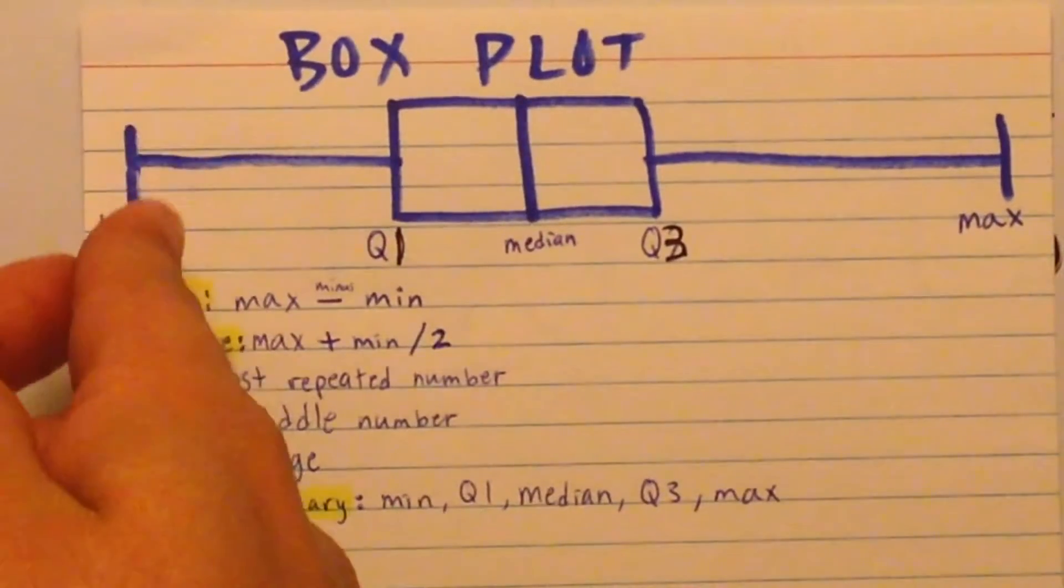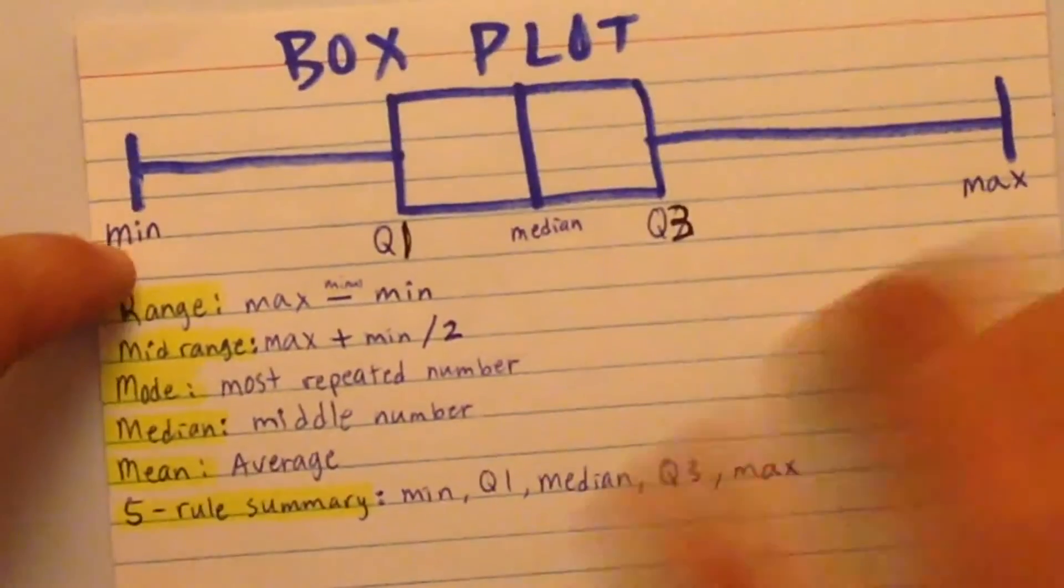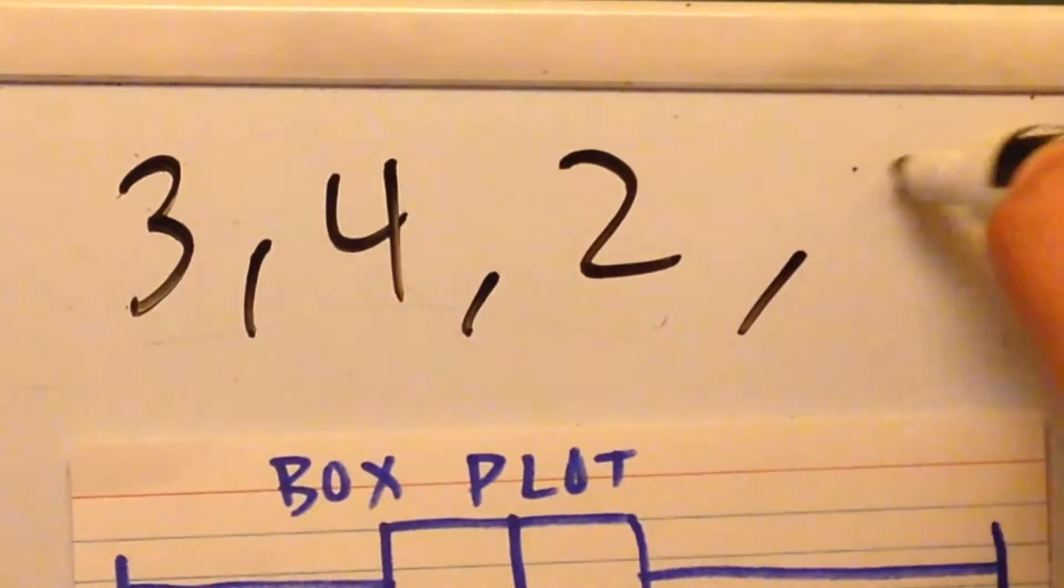We're going to start from here. That's the minimum. The minimum number, let's say if you have a set of numbers, like in a question you're going to have a set of numbers. Let's say we have 3, 4, 2, and 9.